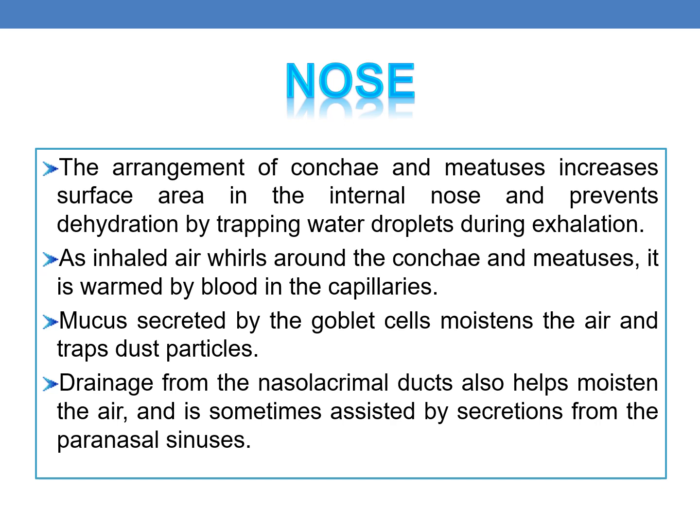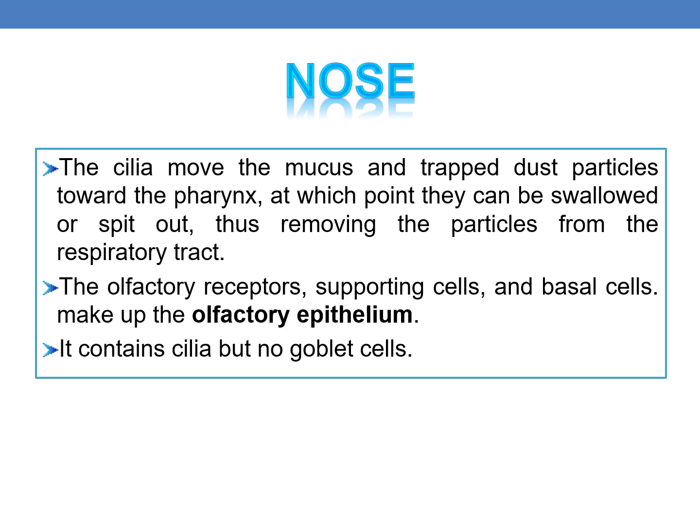As inhaled air whirls around the conchae and meatus, it is warmed by blood in the capillaries — that is why the inhaled air is warm. Mucus secreted by the goblet cells moistens the air and traps dust particles. Drainage from the nasolacrimal ducts also helps moisten the air, sometimes assisted by secretions from the paranasal sinuses. The cilia move the mucus and trapped dust particles toward the pharynx, where they can be swallowed or spit out, thus removing the particles from the respiratory tract. The olfactory receptors, supporting cells, and basal cells make up the olfactory epithelium, and these cells contain cilia but not goblet cells.